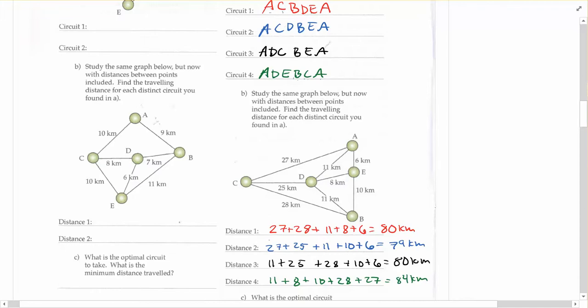And so we're looking for the minimum one here, which is clearly the 79 kilometers. So that's obviously going to be our shortest way to complete this circuit and visit all those nodes.